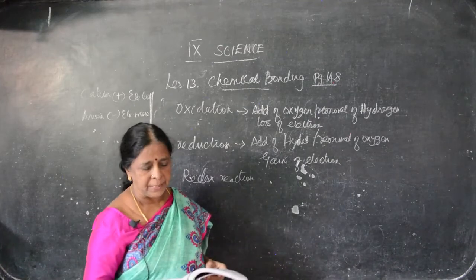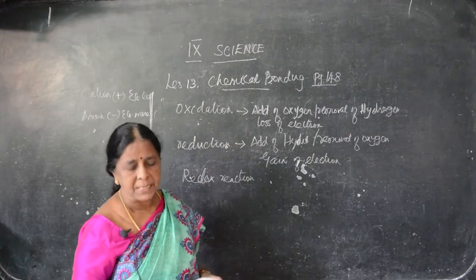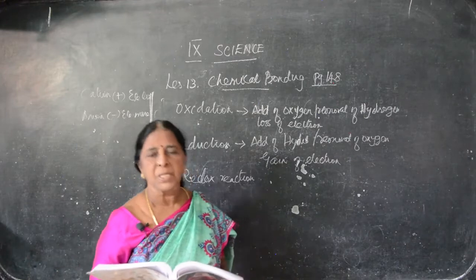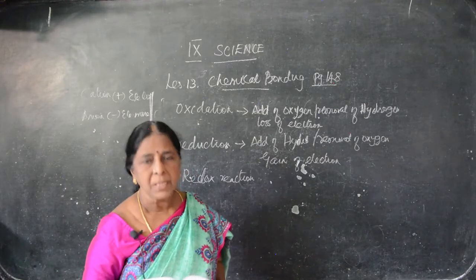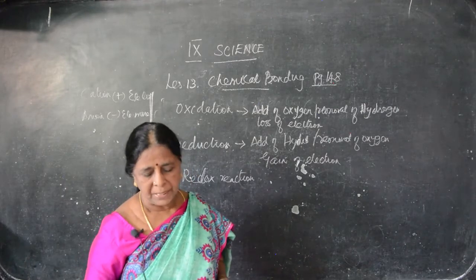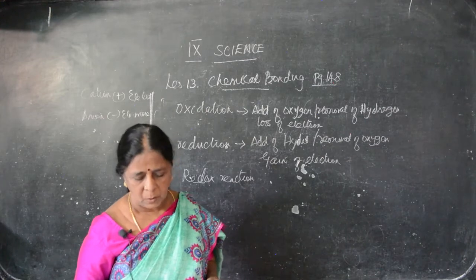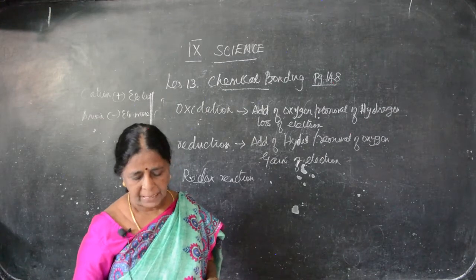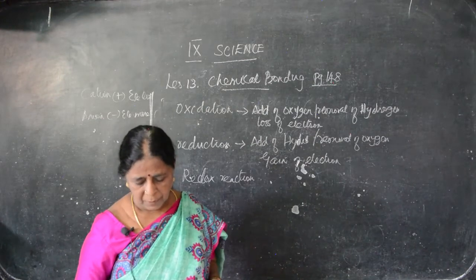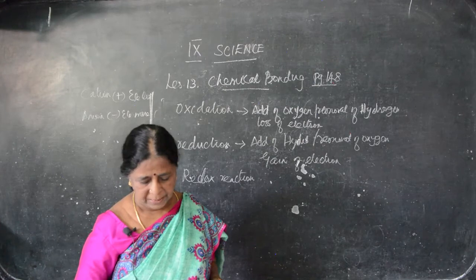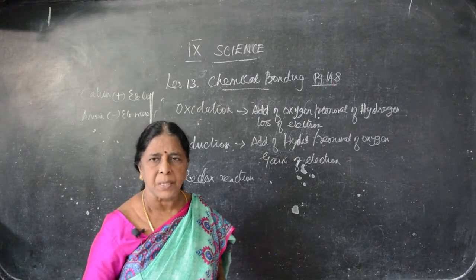I will give the clear definition: oxidation is the chemical reaction which involves addition of oxygen, removal of hydrogen, and loss of electron. Reduction is: addition of hydrogen, removal of oxygen, gain of electron.